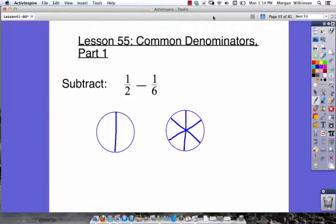Lesson 55 is about common denominators, and this is part one of this type of problem. If we look at our first problem, we've got subtraction. We want to subtract 1 half minus 1 sixth.